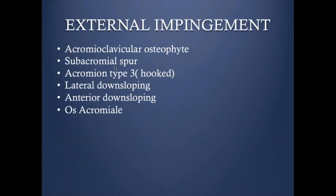Let's look at some causes of external impingement. We're going to look at the acromiohumeral interval and the acromioclavicular joint to see what can cause impingement on the rotator cuff between the acromion and the humeral head. Causes include acromioclavicular joint osteophyte, subacromial spur, acromion type or shape, lateral or anterior downsloping of the acromion, and os acromiale. I'll discuss each one with examples.